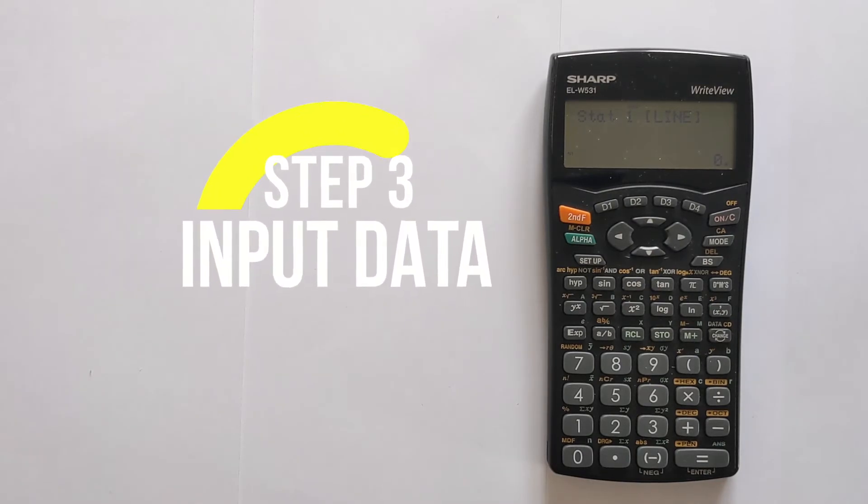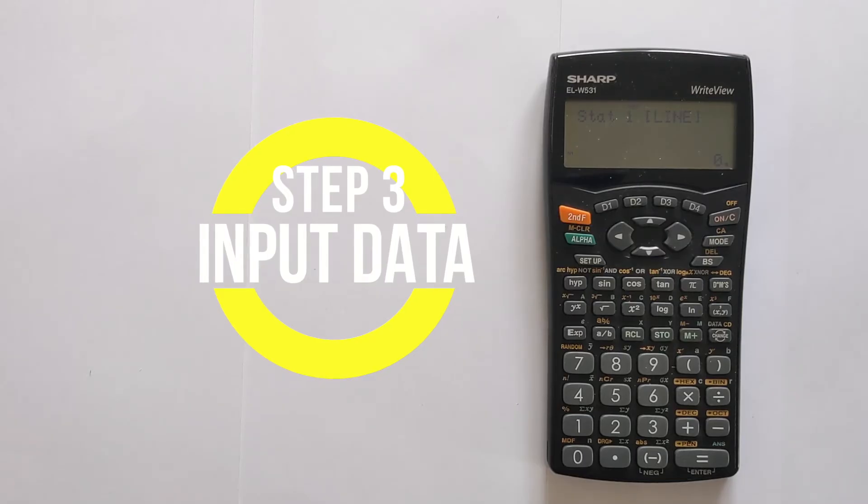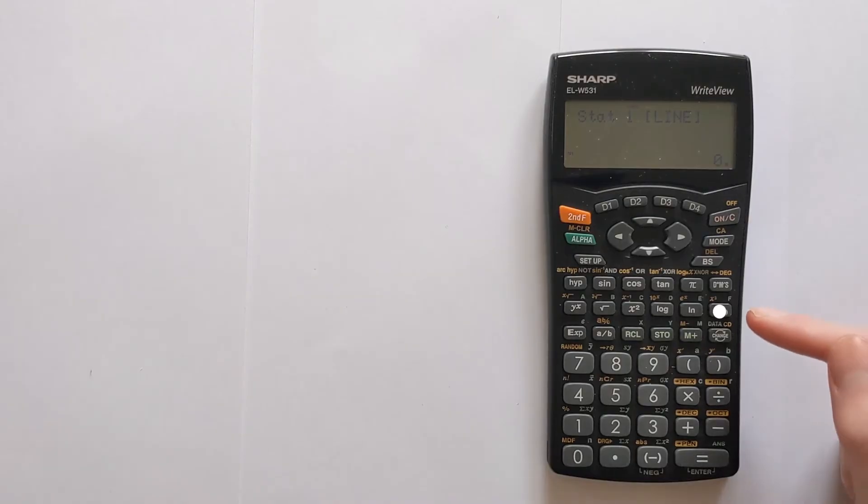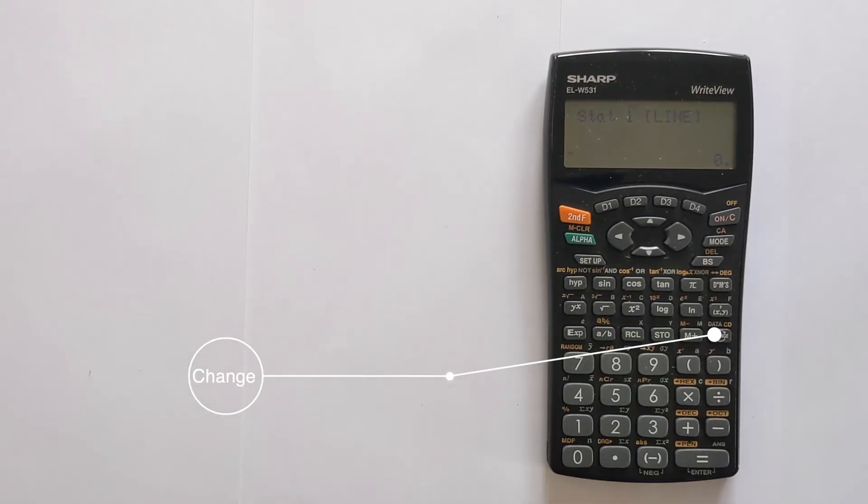We obviously need to input the data. There's two key buttons that you need to be aware of. Firstly, is this comma that's going to separate your data. And then this button change here that's got data on the top is how you're going to actually save that to the calculator's memories.